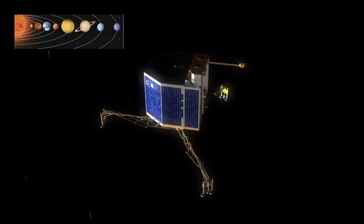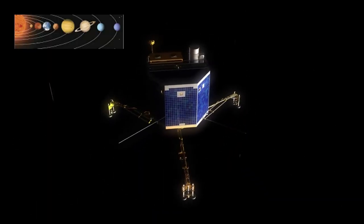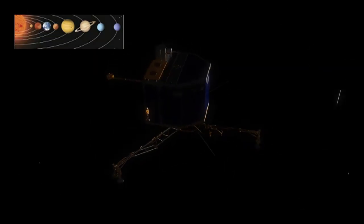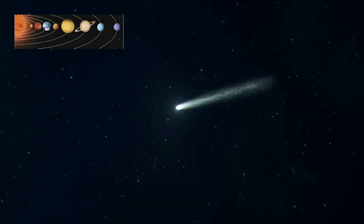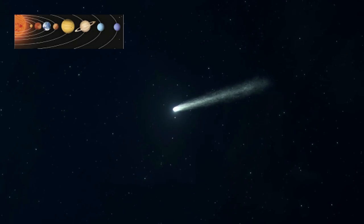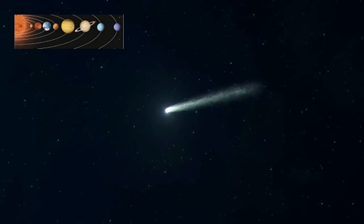Among these icy visitors is a true anomaly: Comet 3I ATLAS, only the third interstellar comet ever detected. Unlike usual long-period comets that return after thousands of years, this one is a drifter from outside our solar system, carrying chemistry never before seen. Its emerald green coma is already puzzling scientists and could rewrite what we know about how comets form beyond our neighborhood.